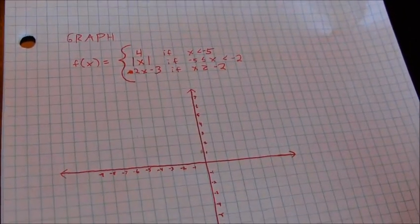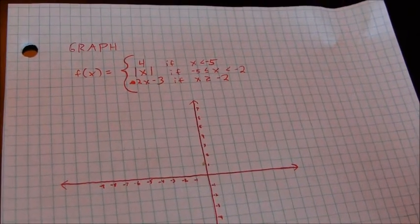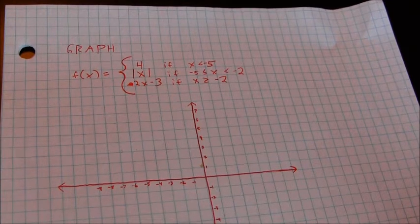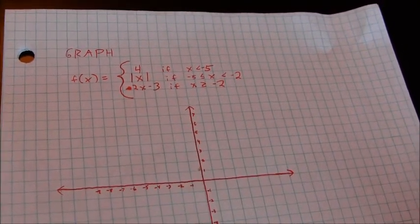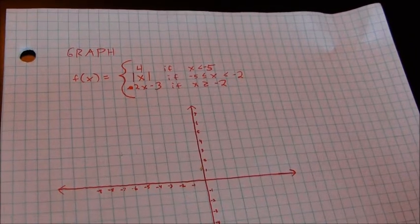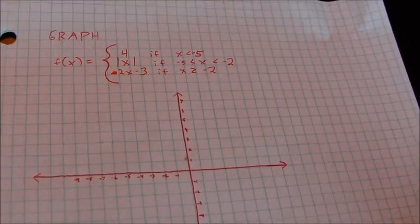We're going to do a graph of a piecewise function. You can see here that I have f(x) equals 4 if x is less than negative 5, absolute value of x if x is between negative 5 and negative 2, and f(x) is 2x minus 3 when x is greater than or equal to negative 2.